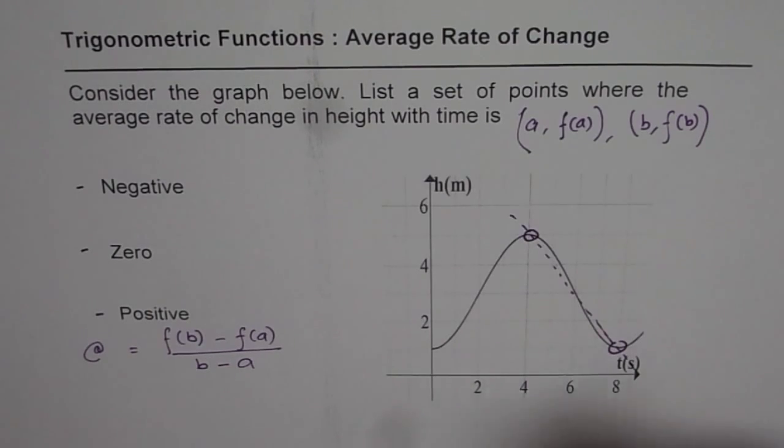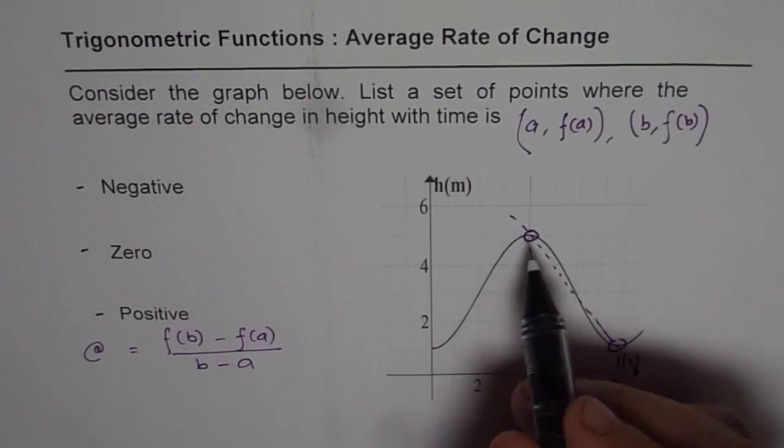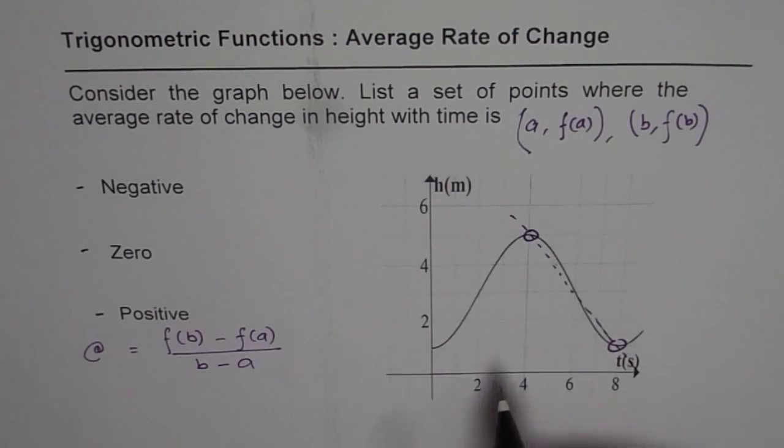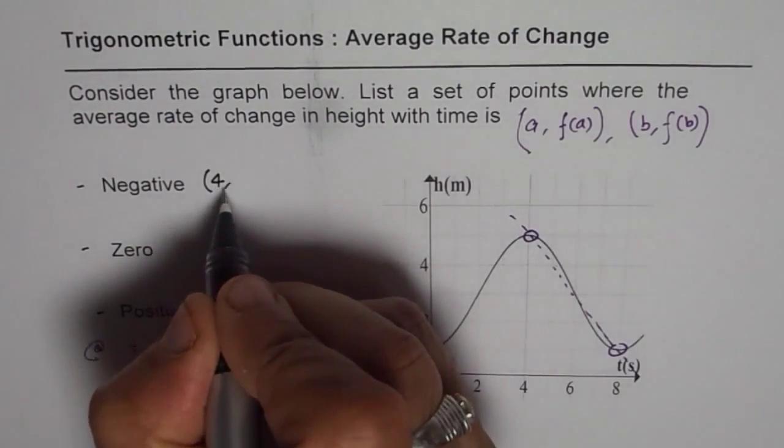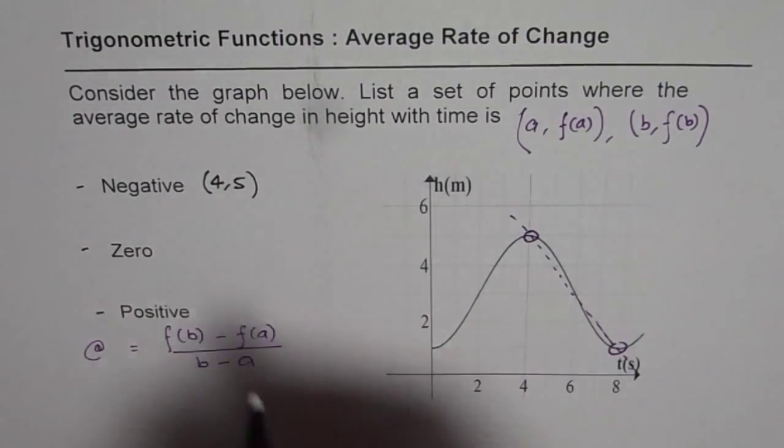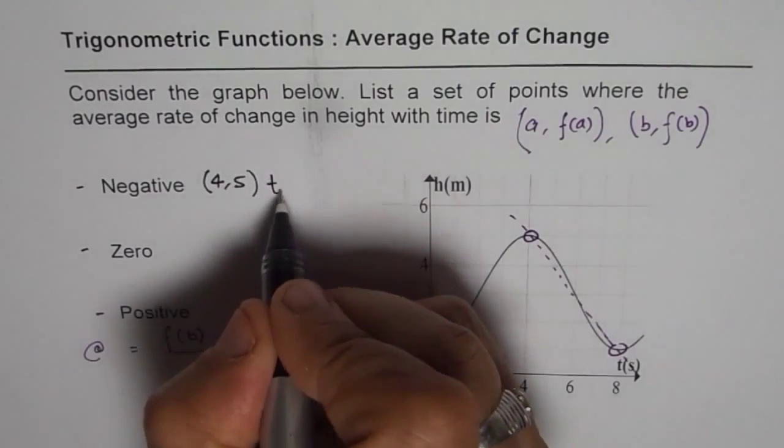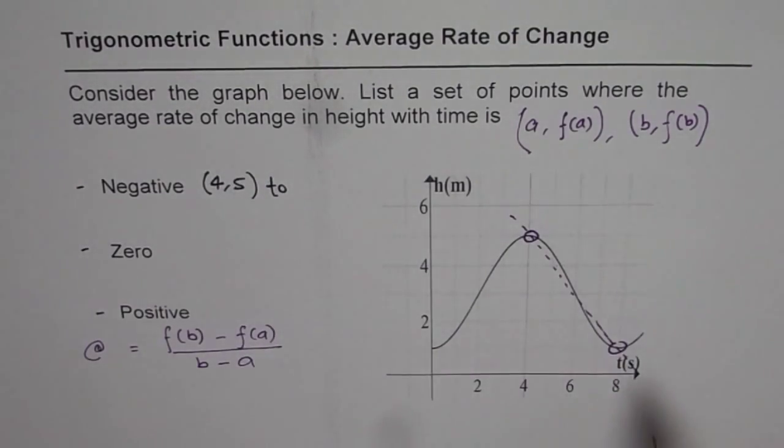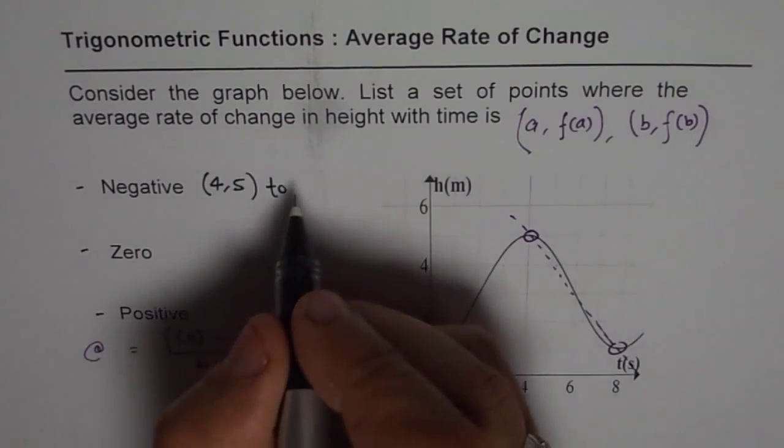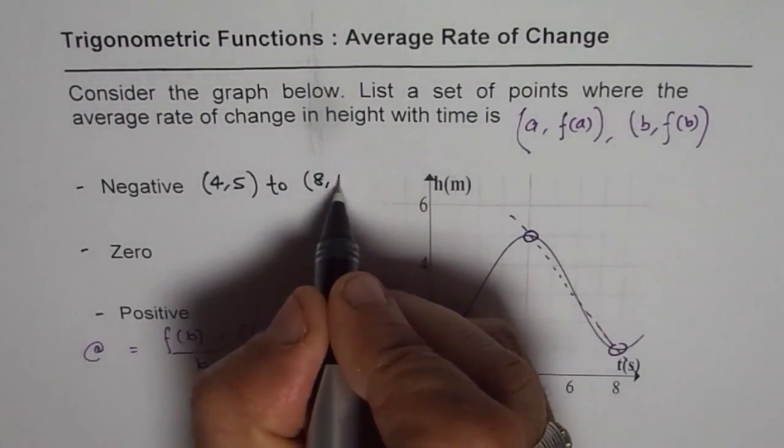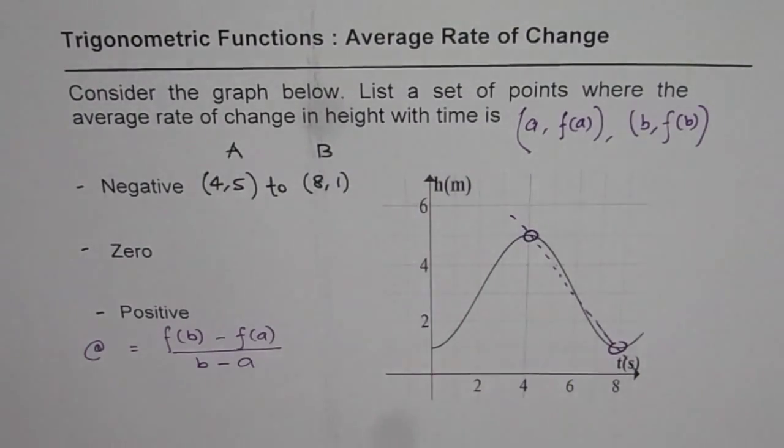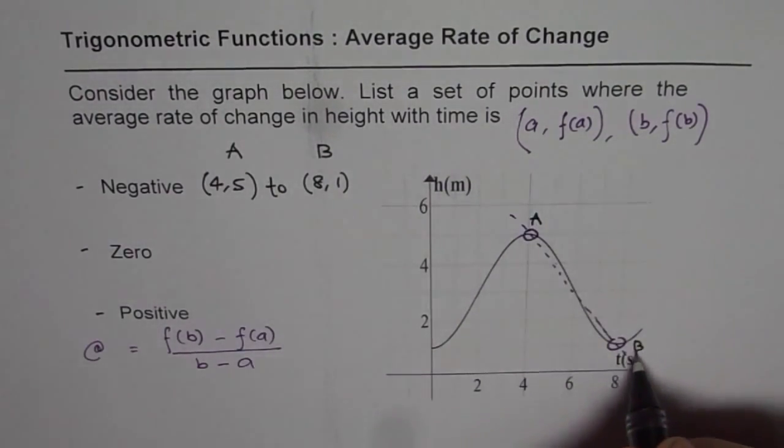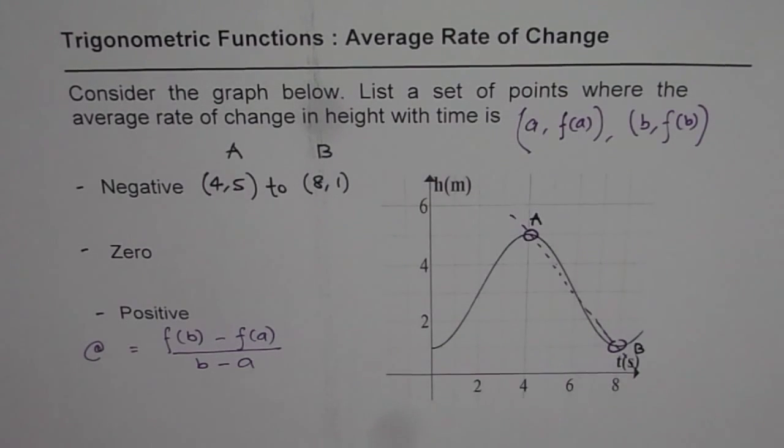So let's list these points. The point is from 4, the value here is x value 4, t you can say, and height is 5. So the value is from (4,5) to the other point is at (8,1). So that becomes the set of points. Let's call these set as A and B, where the slope is negative.